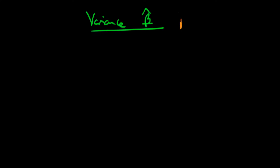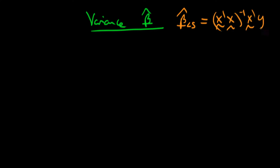Reminding ourselves of the explicit expression for beta hat least squares in matrix form: it's just equal to X prime X to the power minus one times X prime Y, where Y is our dependent variable. To find the variance of this expression we need to make use of a few general results.